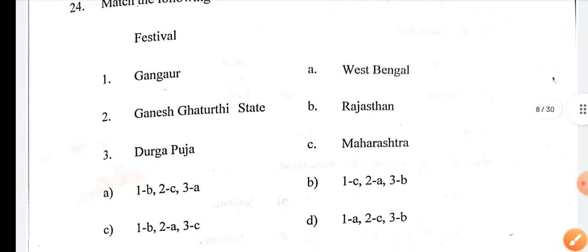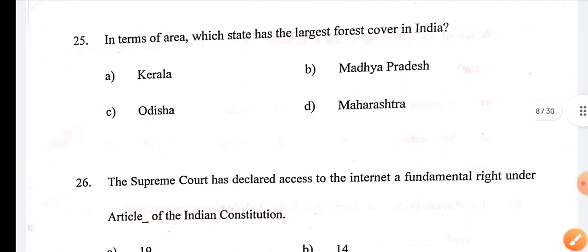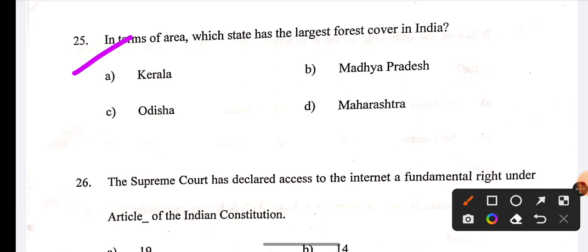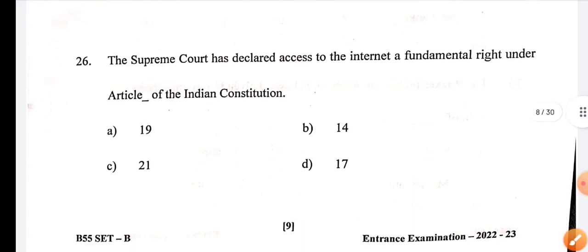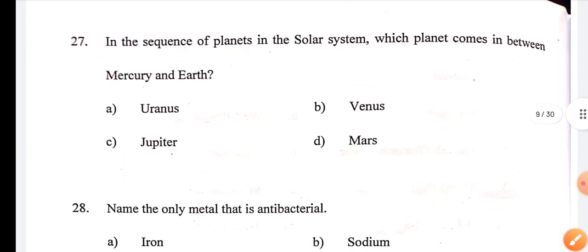Next question: Which state has the largest forest cover in India? Question 25, the answer is B. Next: Supreme Court has declared access to the internet a fundamental right under which article of Indian Constitution? Question 26, the correct answer is Article 21.